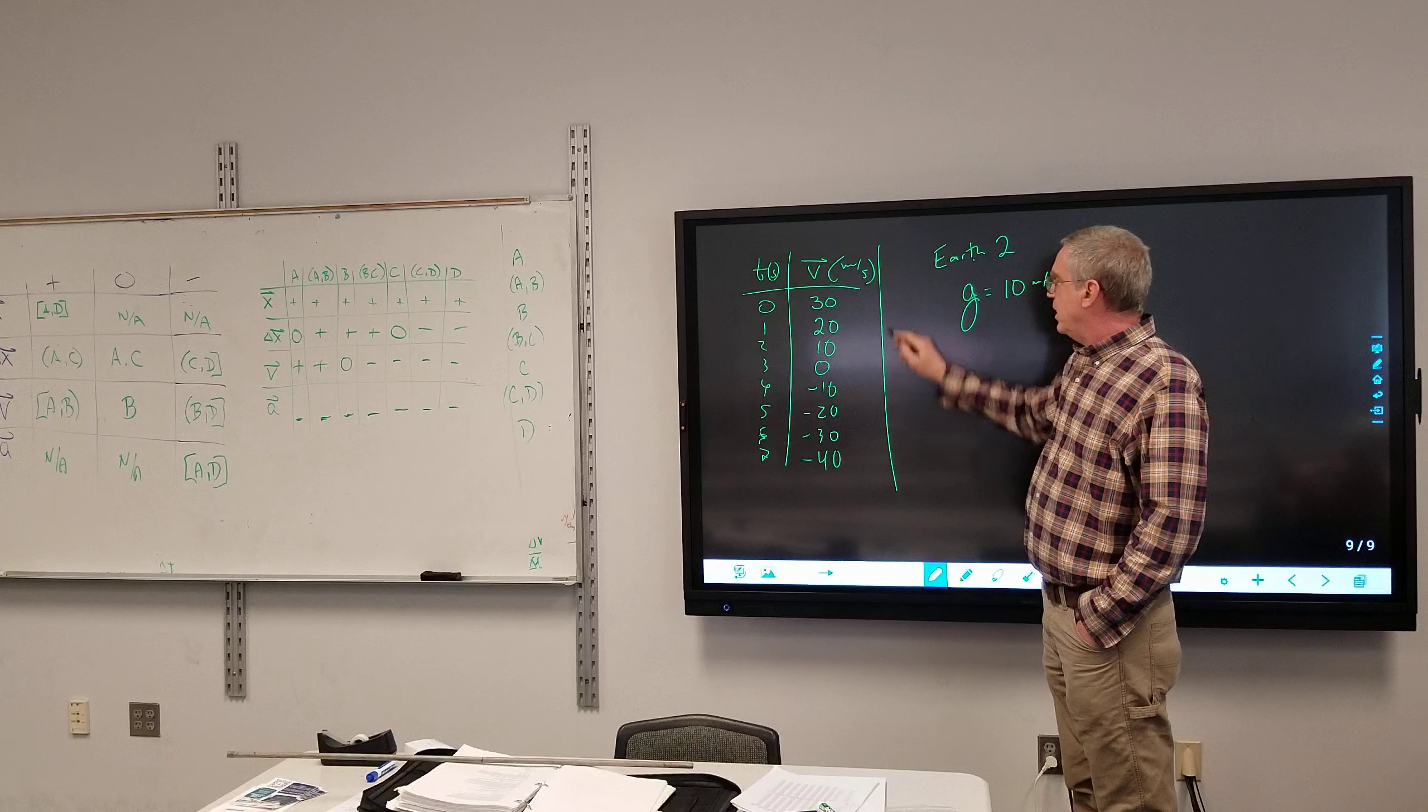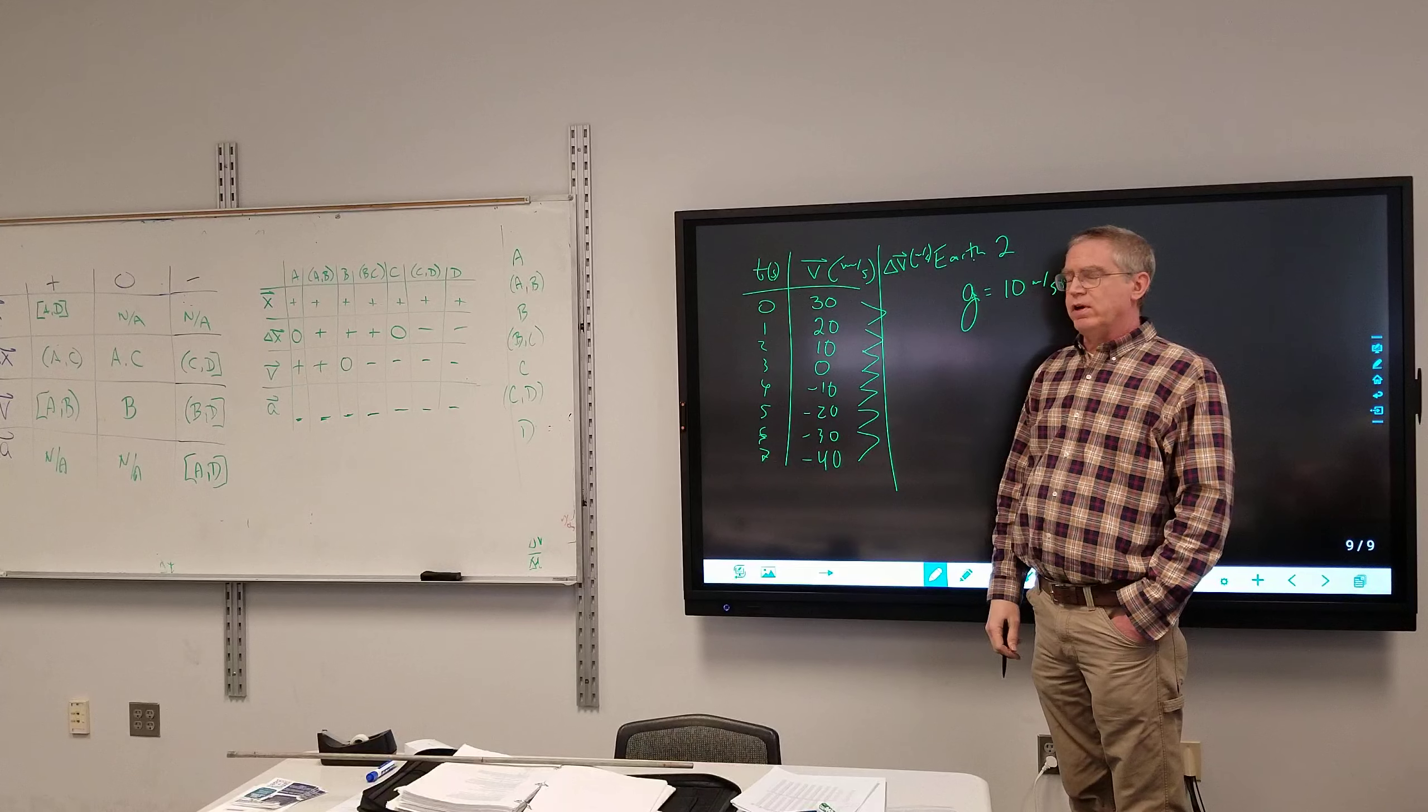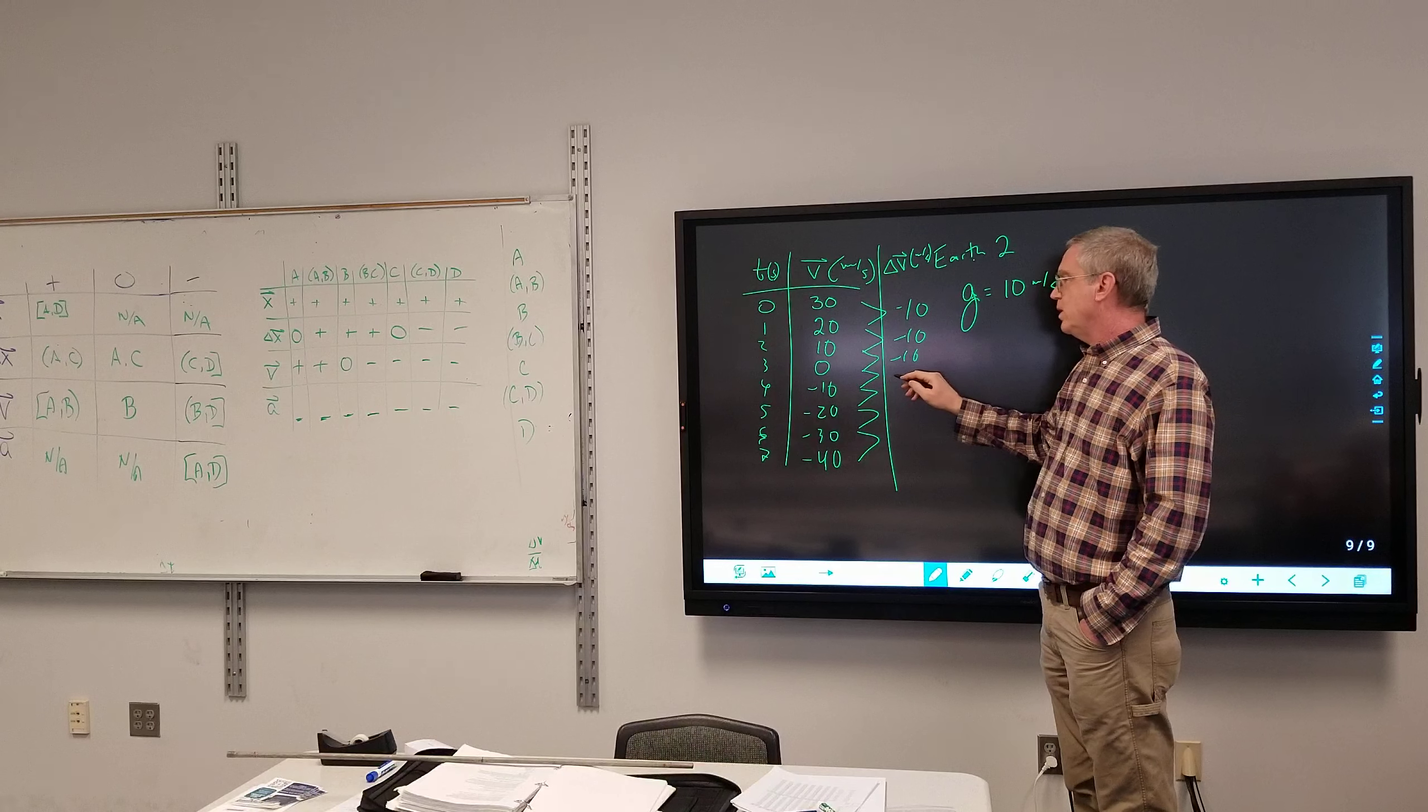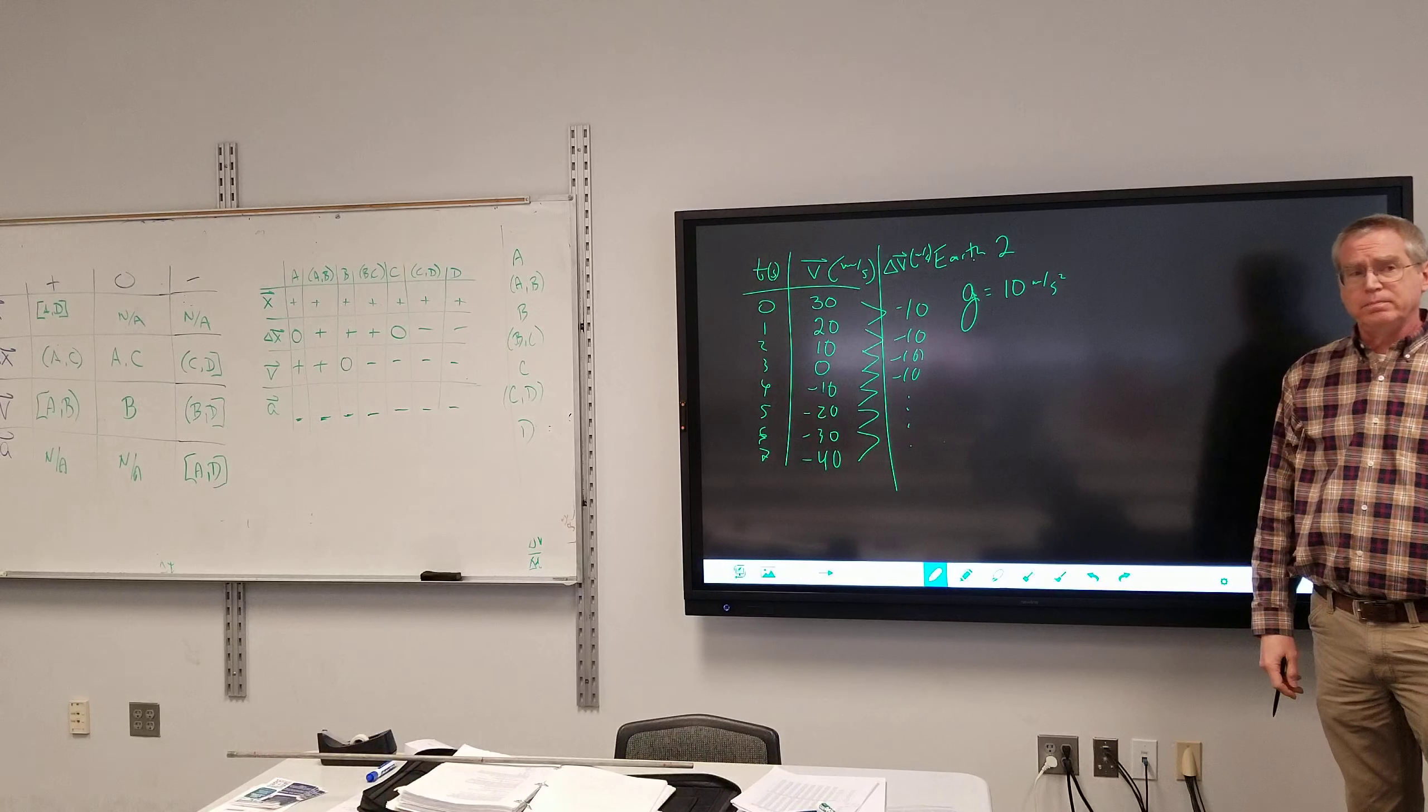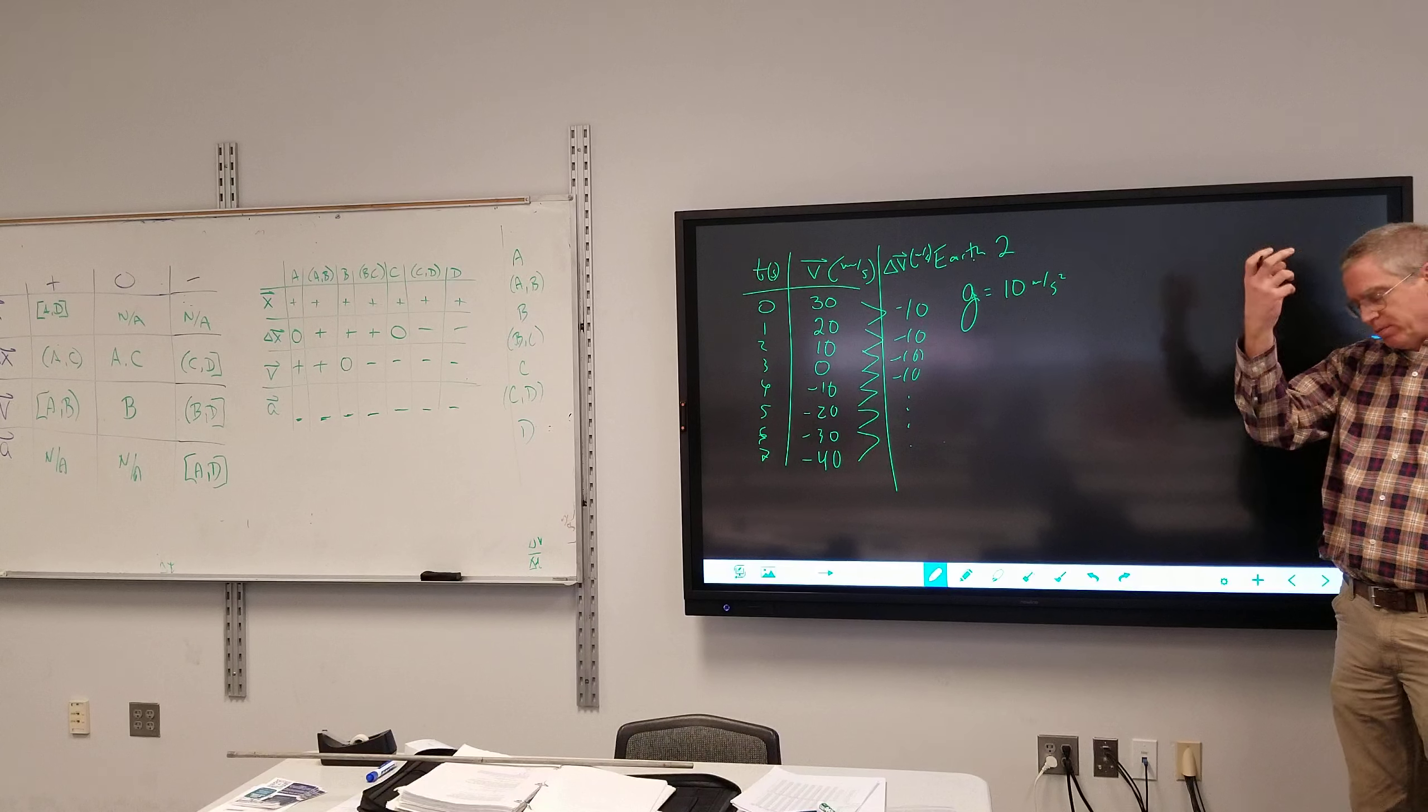If we look at change in velocity, delta V in meters per second, from 30 to 20, what is the change in velocity? From 40 to 10, negative 10. 10 to 0, negative 10. 0 to negative 10, negative 10. It is constant, it's negative the entire time.